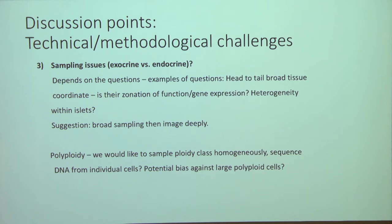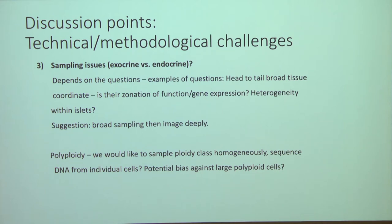Imaging modalities were discussed as critical for the pancreas to zoom in on the 1% islets and surrounding tissue to explore the spatial axis. The polyploidy of pancreatic acinar tissue was also raised as an important issue — many acinar cells are binucleated or have 8N or more copies. This means that with drop-seq or other single-cell methods, we must ensure we don't bias against these very large cells.